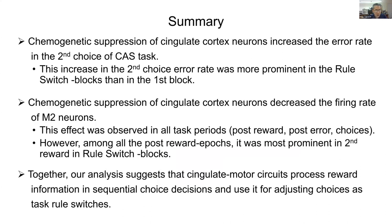In summary: chemogenetic suppression of cingulate cortex neurons increased the error rate in the second choice, and this effect was most prominent in the rule switch blocks. Additionally, chemogenetic suppression of cingulate cortex neurons decreased the firing rate of premotor cortex neurons, and this decrease was most prominent in the second reward period during rule switch blocks. Together, our results suggest that the cingulate motor circuit processes reward information in a sequential choice decision setting, adjusting choices following task rule switches.